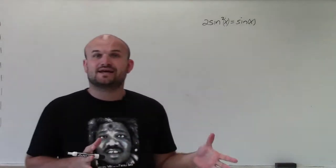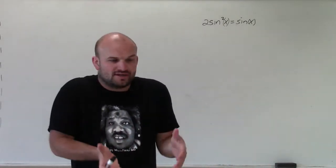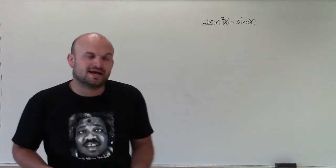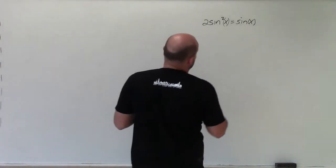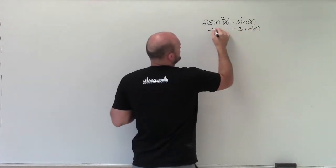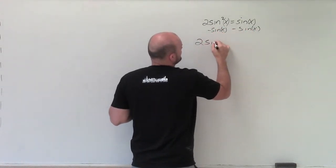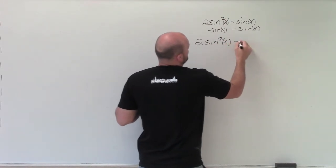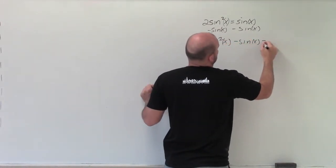So we see in this case that we have a sine of x on both sides. And whenever we want to solve, we want to isolate our variable x. So let's get them onto the same side. To do that, I'm simply going to subtract sine of x on both sides. Therefore, I obtain sine squared of x minus sine of x equals 0.